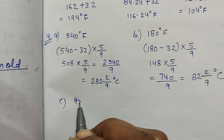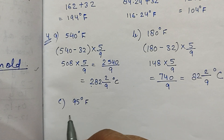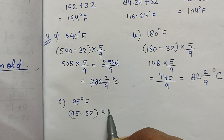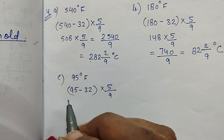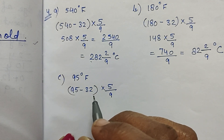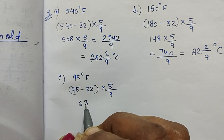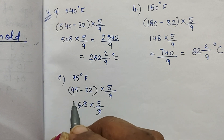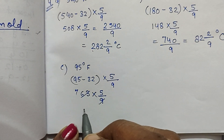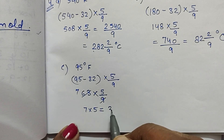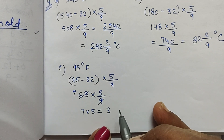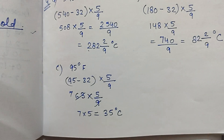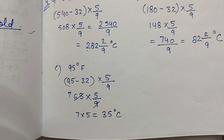Part C: 95 degree Fahrenheit. So 95 minus 32 into 5/9. 95 minus 32 is 63. 63 multiplied by 5/9 — 9 divides into 63 giving 7. 7 into 5 is equal to 35 degree Celsius.